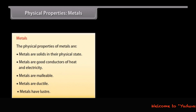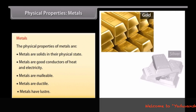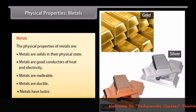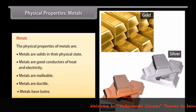Lustre: metals reflect light from their shiny surface and can also be polished. For example, gold, silver, and copper are metals with a shiny surface and can be polished.